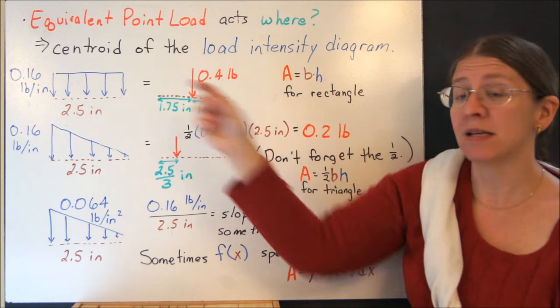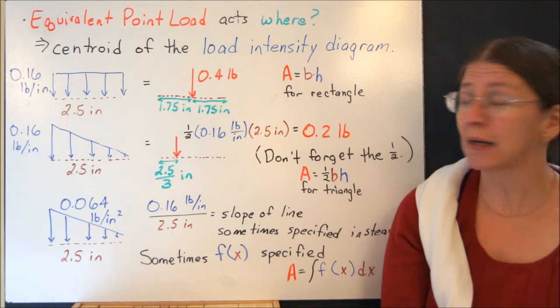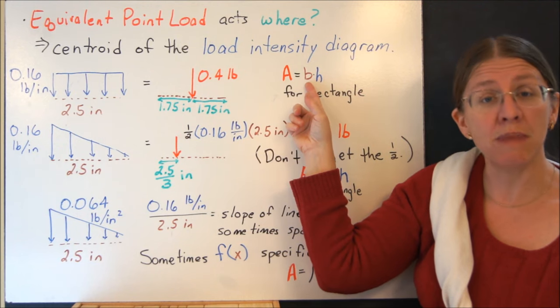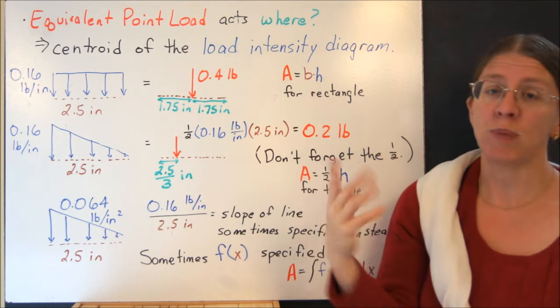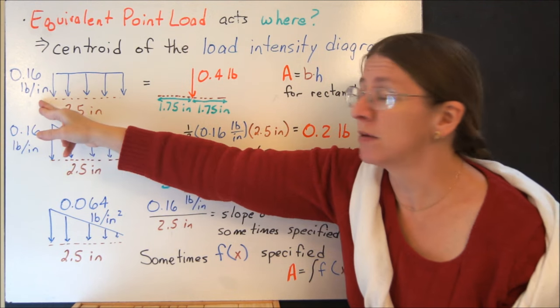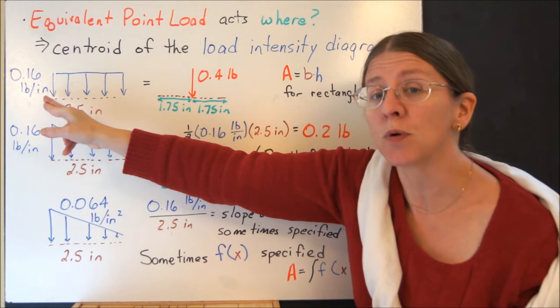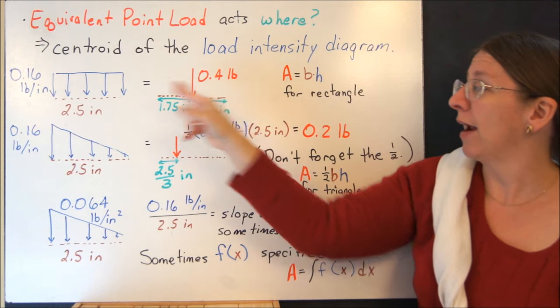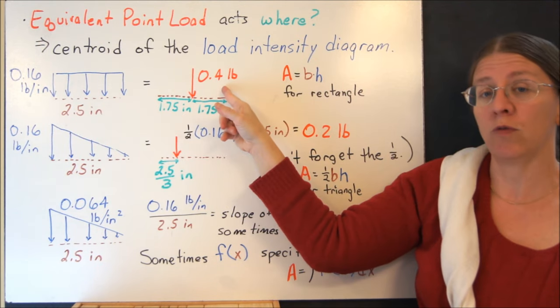So if this is a rectangle, the centroid of a rectangle is in the middle. And the area, which is the magnitude of the equivalent point force, is base times height. So I will take 2.5 and multiply it by 0.16 pounds per inch, and I get the area of my rectangle is 0.4.